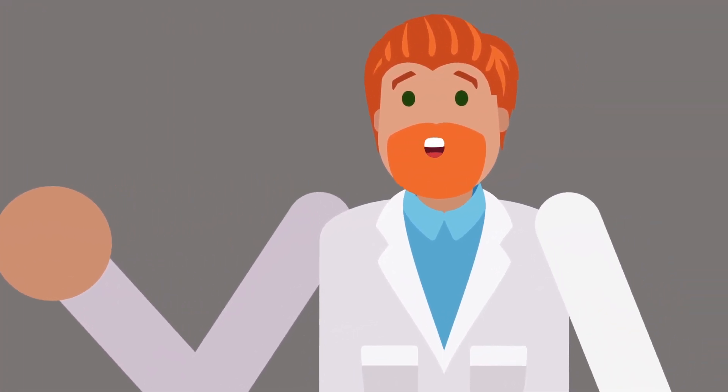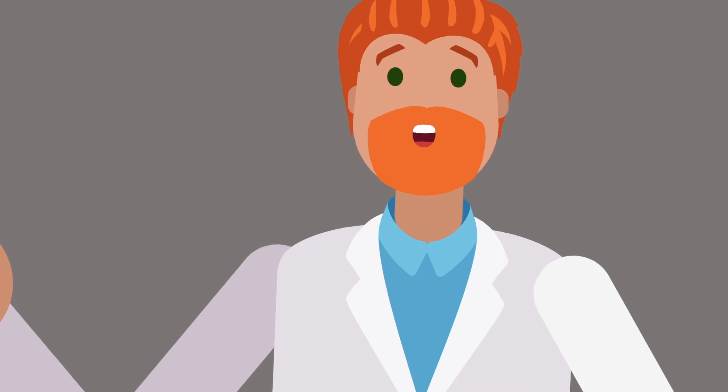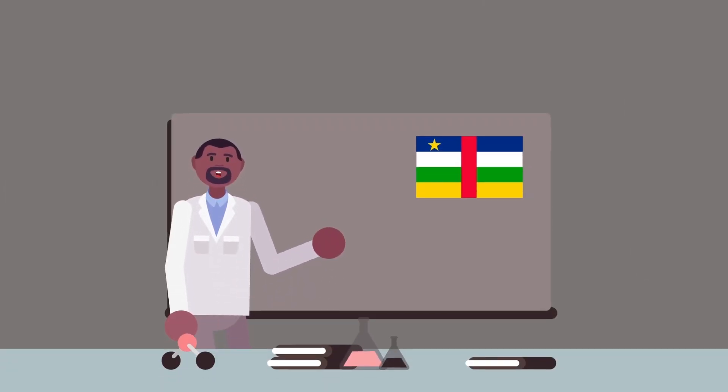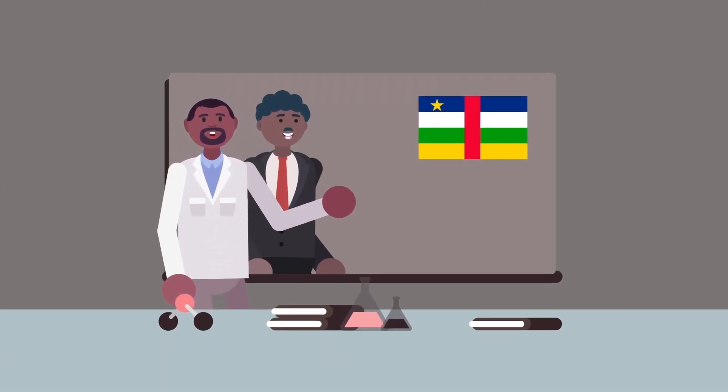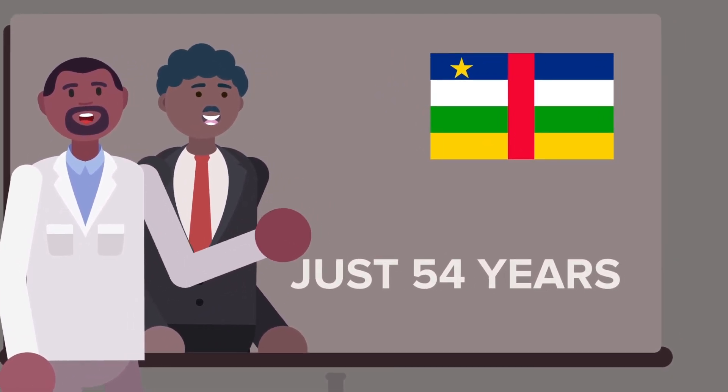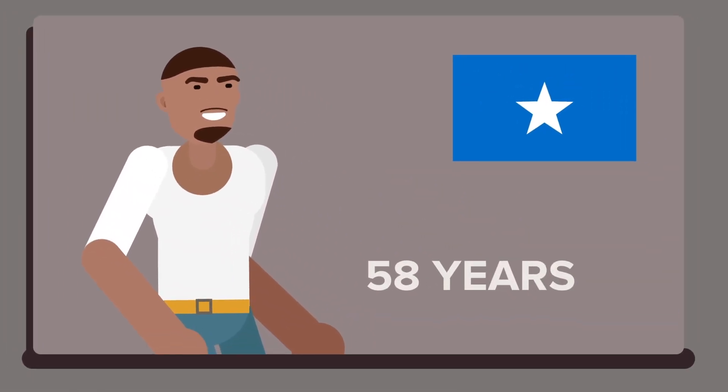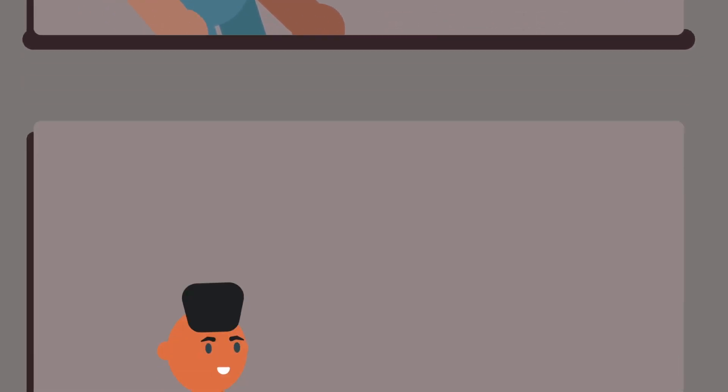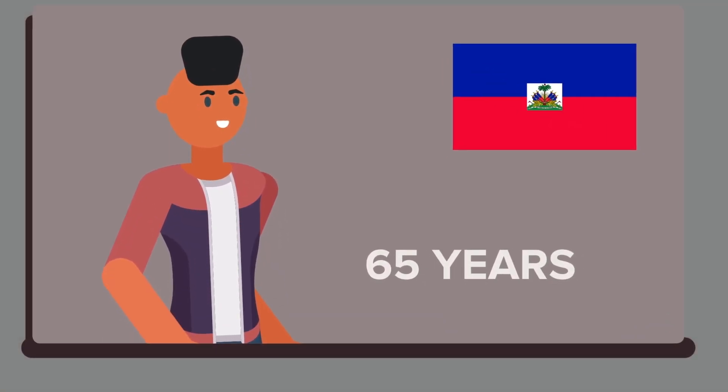Less developed countries unfortunately have a much lower life expectancy. In the Central African Republic, the region with the lowest life expectancy in the world, the average life expectancy is just 54 years. Somalians can expect to live 58 years on average, and people living in Haiti have an expectancy of 65 years.